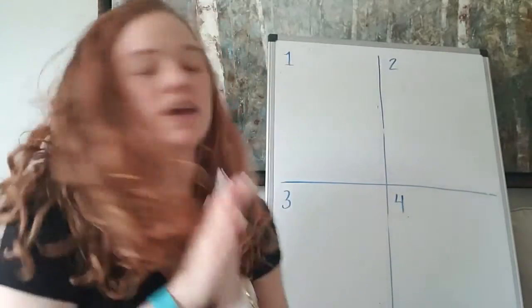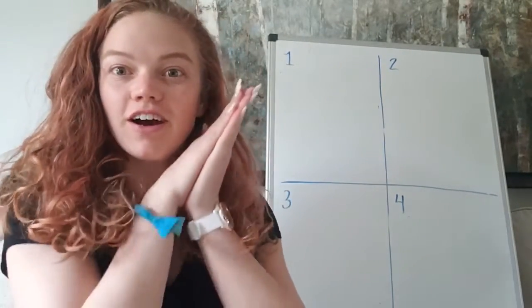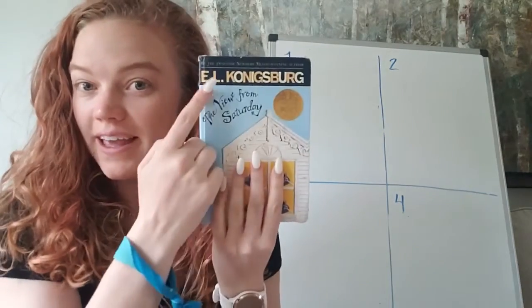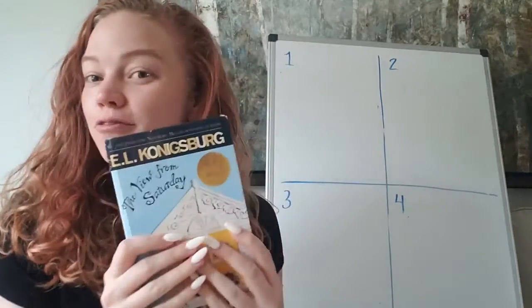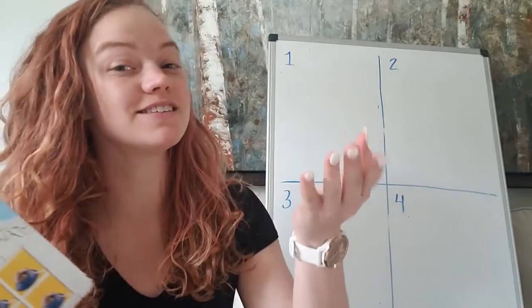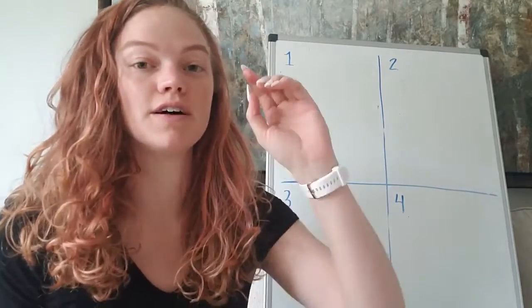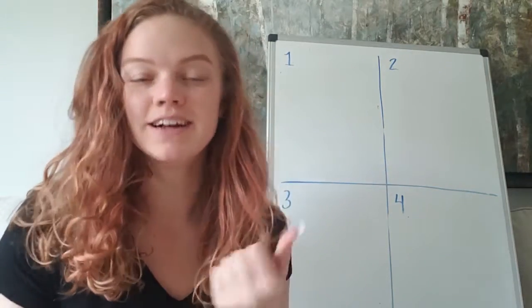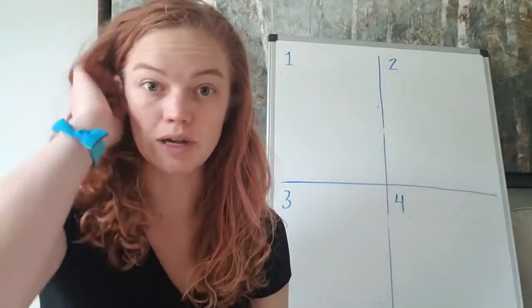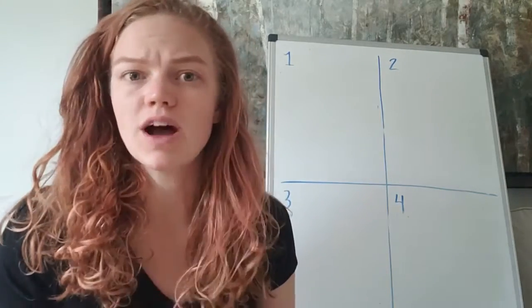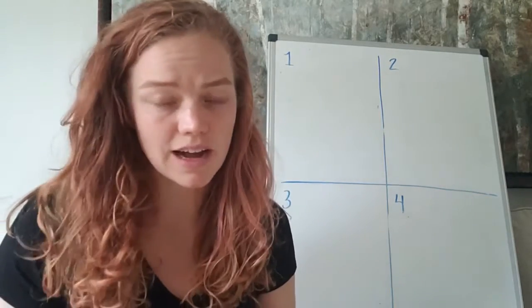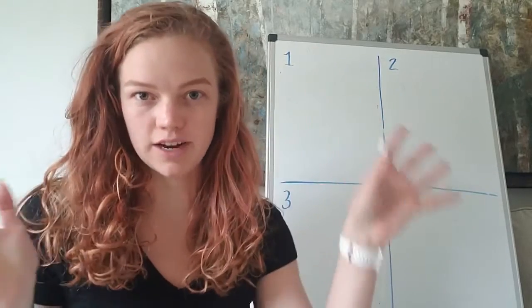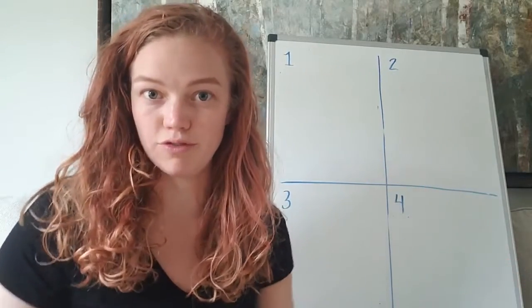Hi fifth grade! We are going to be introducing our new novel today. It is The View from Saturday by E.L. Konigsberg. Is that name familiar? It's because she is the author of both The View from Saturday and From the Mixed Up Files of Mrs. Basil E. Frankweiler. This will be an author study which will allow us to compare the two novels, compare characters, look at the writing style of the author, and discuss how we see her taking inspiration and putting it into two different works.